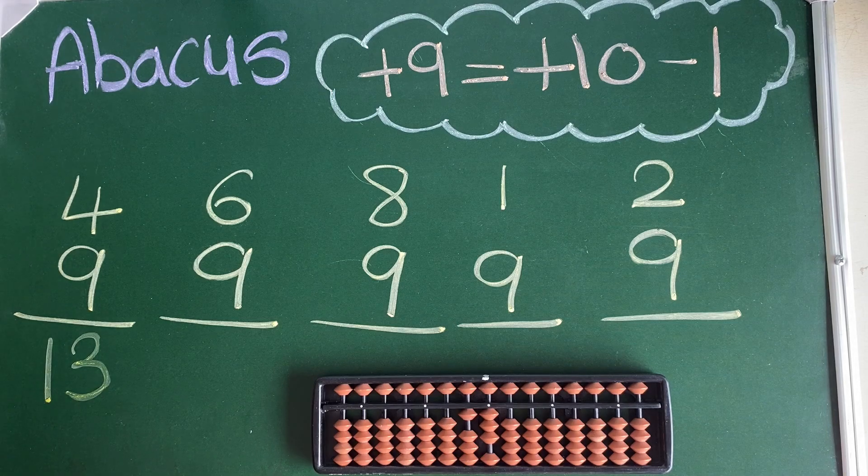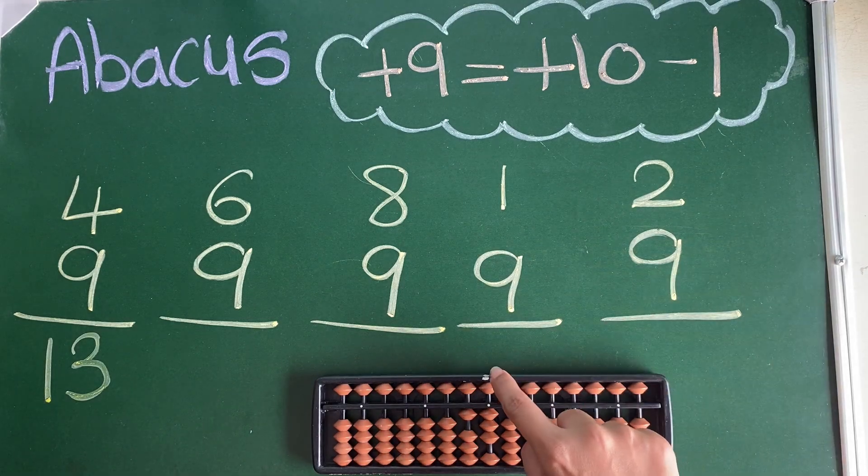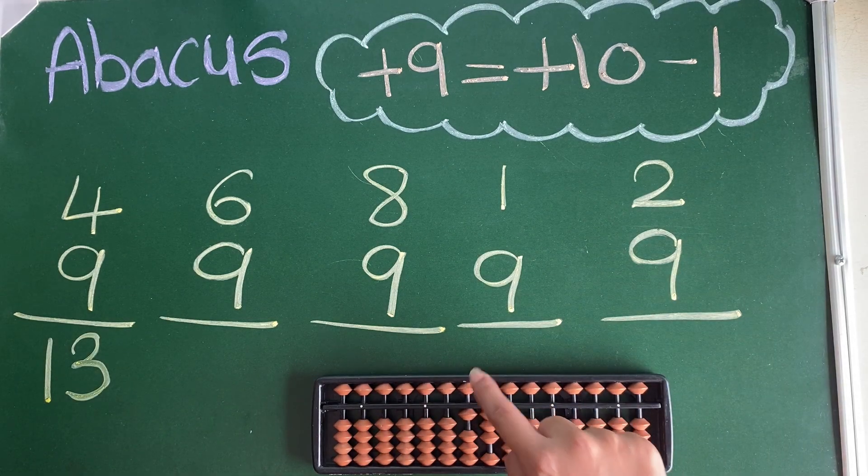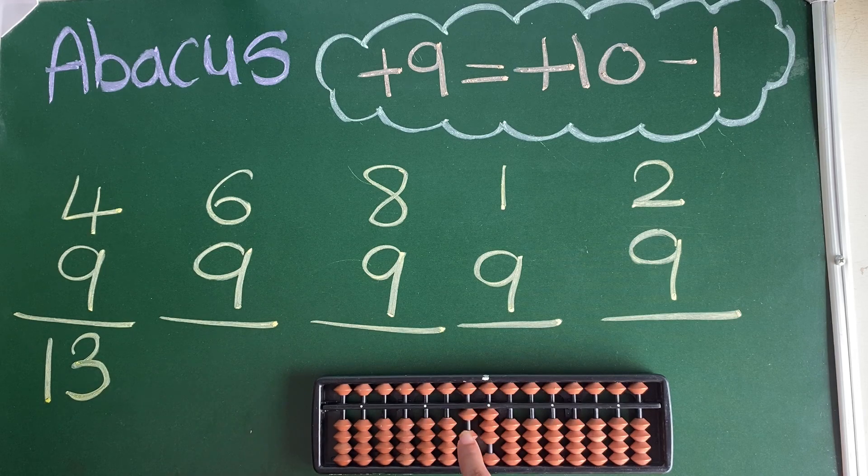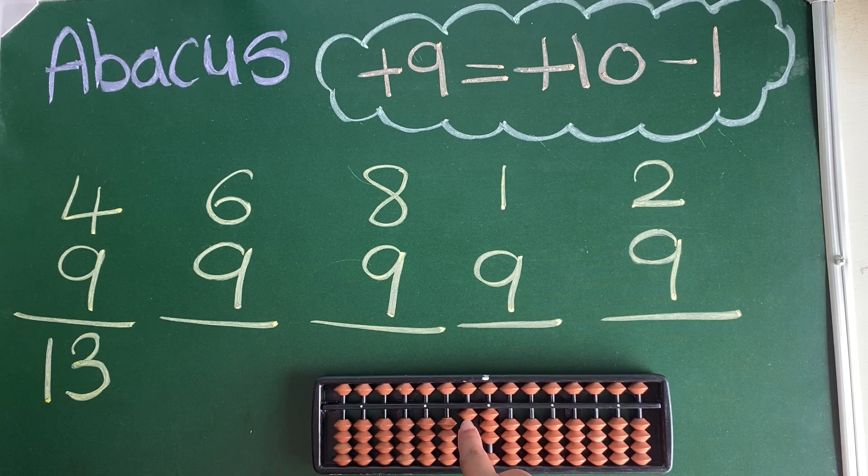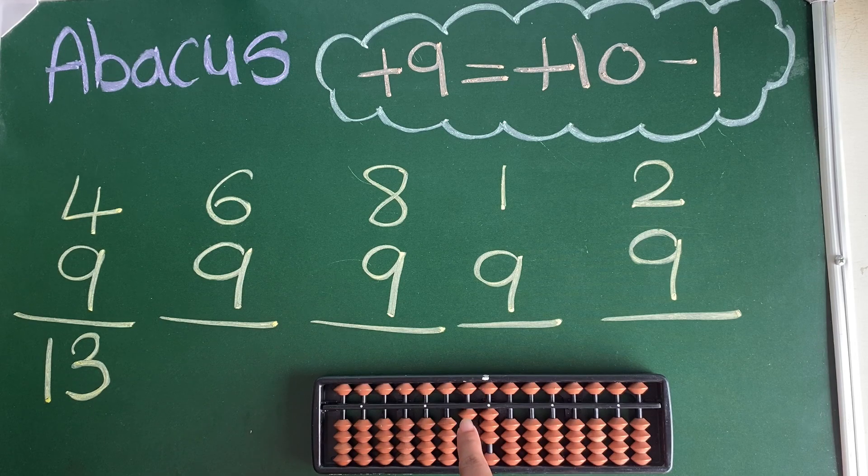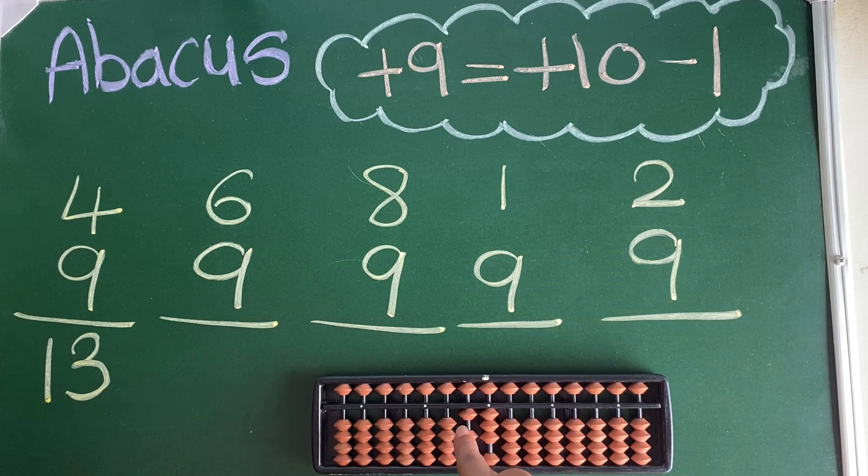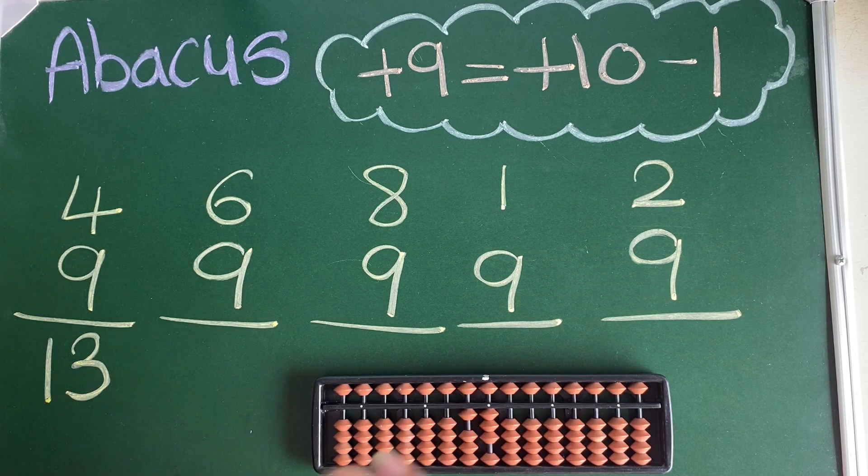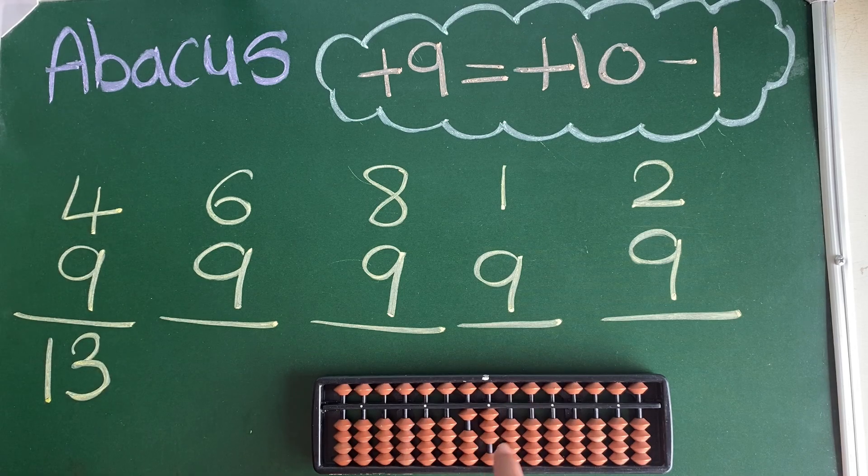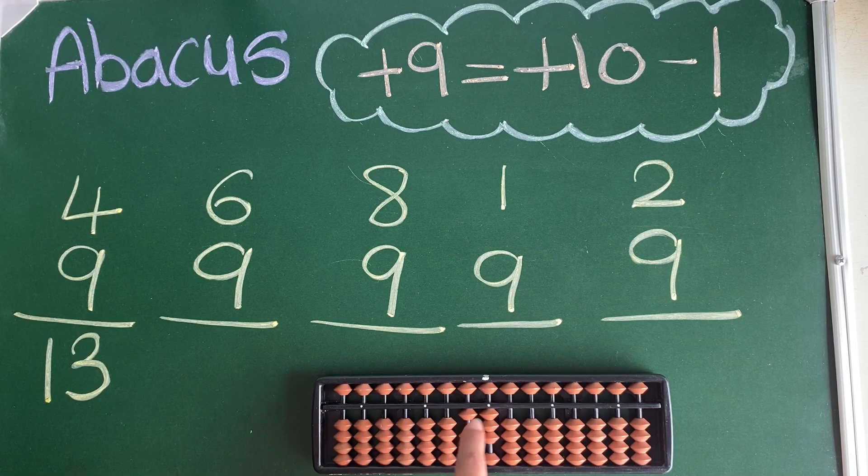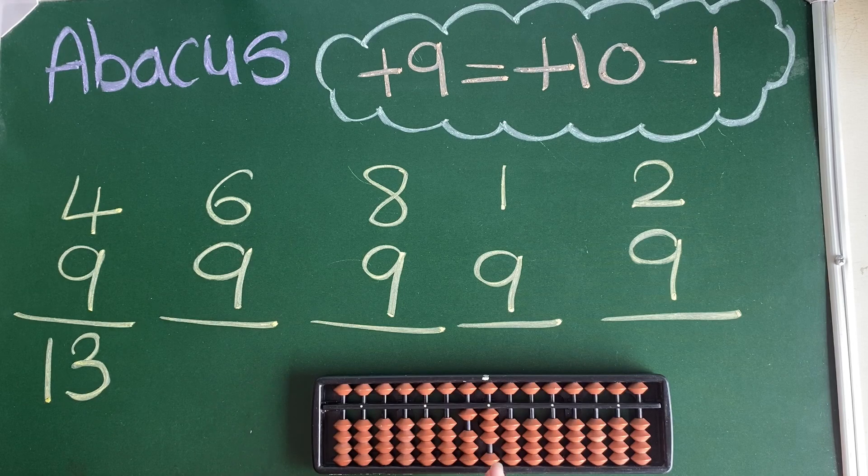As I have told you, this is ones place and this is tens place. When tens place mein aata hai, if there's one in tens place, it is one ten, so it is 10. One tens is 10. This one full bit means 10, and here are single bits, so the answer is 13.